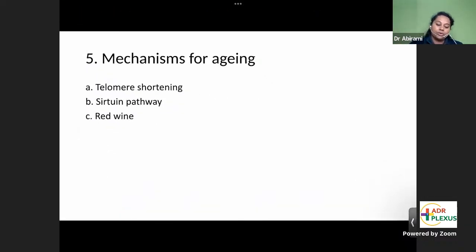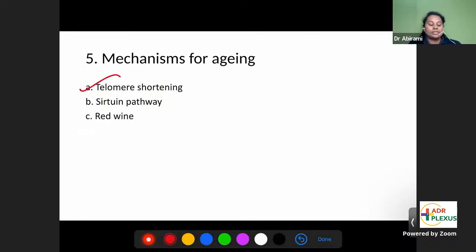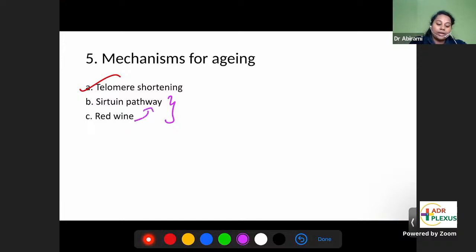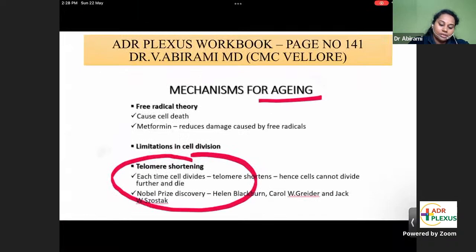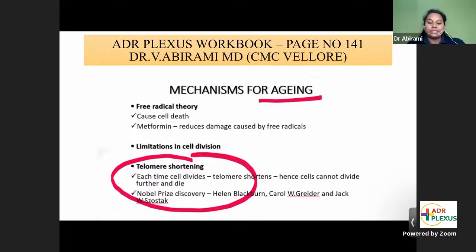The sirtuin pathway is a mechanism by which people are able to live for a longer period — it is a mechanism of longevity, not a mechanism of aging. Similarly, red wine and grapes contain resveratrol, which enhances the sirtuin pathway — so both are mechanisms of longevity. Telomere shortening is a mechanism of aging. This was also from our workbook, exactly from page number 141, where we discussed mechanisms of aging.